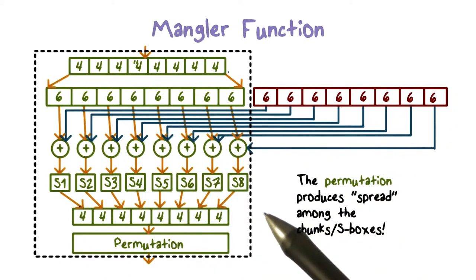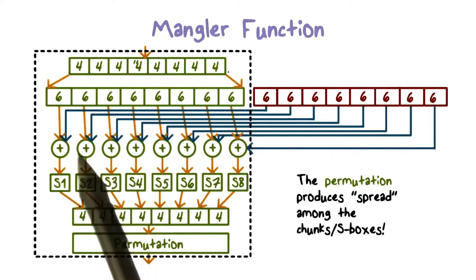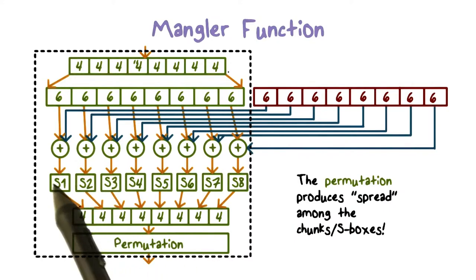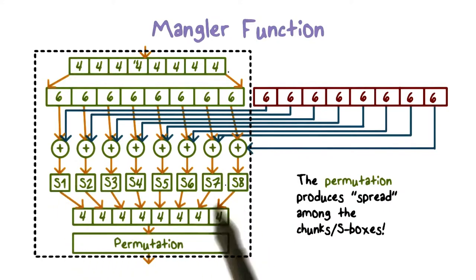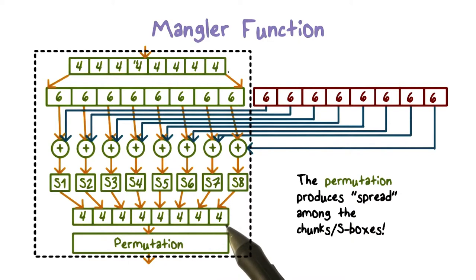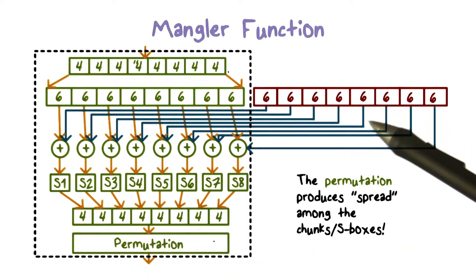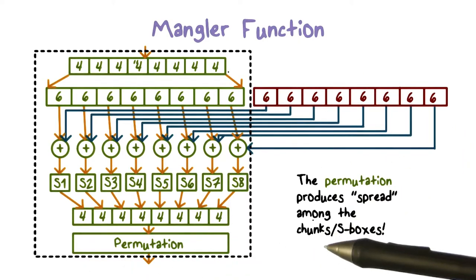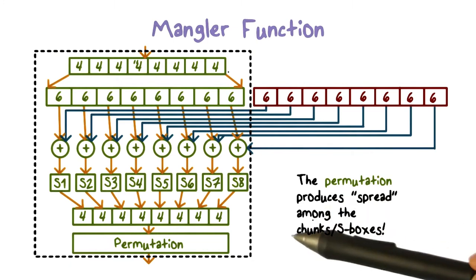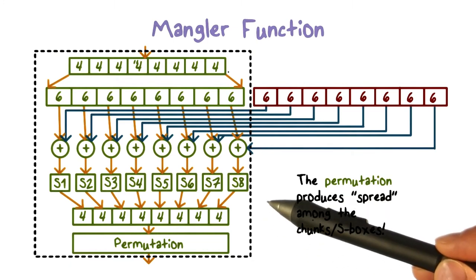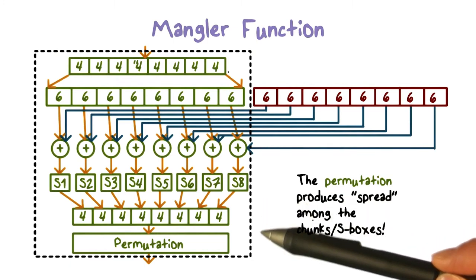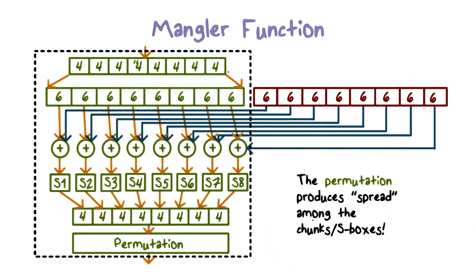The result is that a 48-bit value is substituted down to a 32-bit value. And then the result is permuted. That is, the Mangler function performs both substitution and permutation.